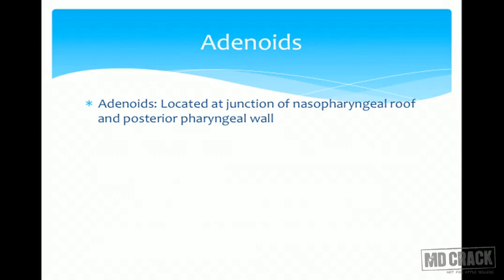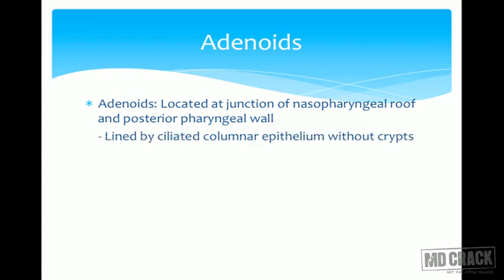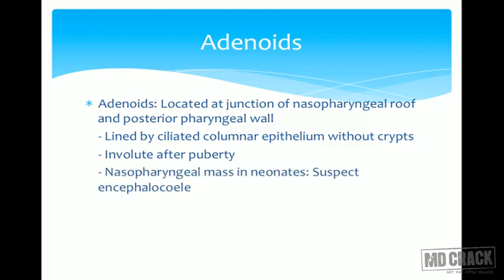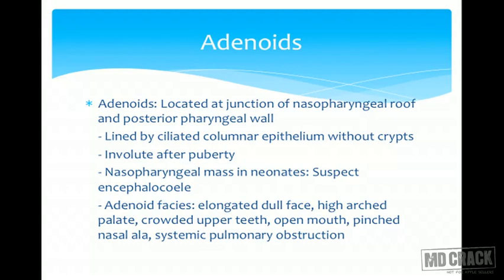Adenoids are located at the junction of the nasopharyngeal roof and posterior pharyngeal wall, lined by ciliated columnar epithelium. Unlike tonsils, adenoids do not have crypts. They involute after puberty around age 12 to 13. A nasopharyngeal mass in neonates should always raise suspicion of encephalocele. Adenoid facies are characterized by elongated dull face, high arched palate, crowded upper teeth, open mouth, pinched nasal ala, and systemic pulmonary obstruction.